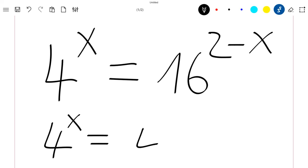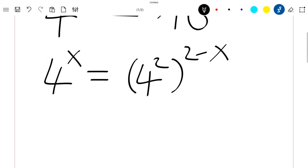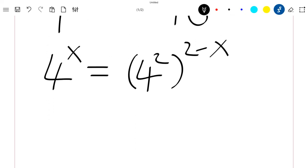We have 4 to the power of x, which is equal to 16. And 16 is in fact 4 squared, everything to the power of 2 minus x.